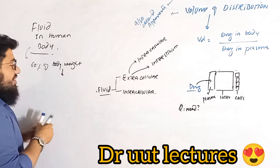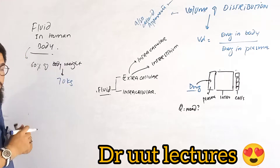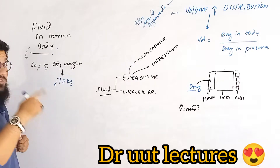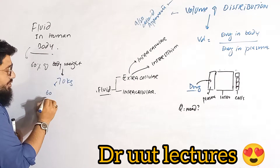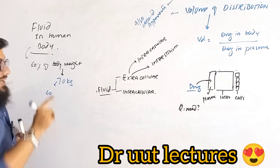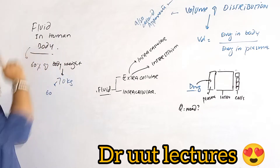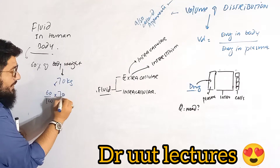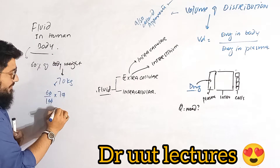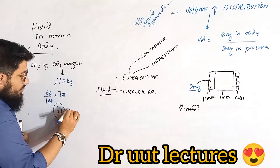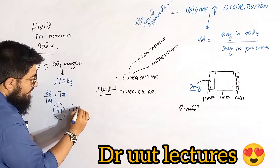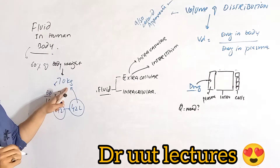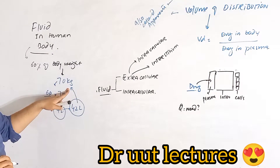Suppose a body has a weight of 70 kg. The question is: what is the body fluid? I will simply take 60% of this person's weight, because the definition tells us that 60% of the weight is the body fluid. So 60% of 70 kg gives us 42 liters — that is the fluid concentration of this individual who weighs 70 kg.